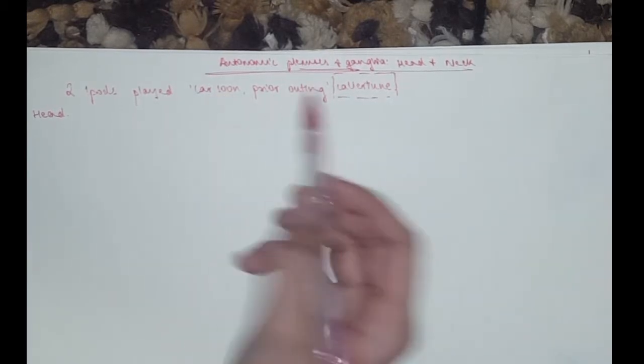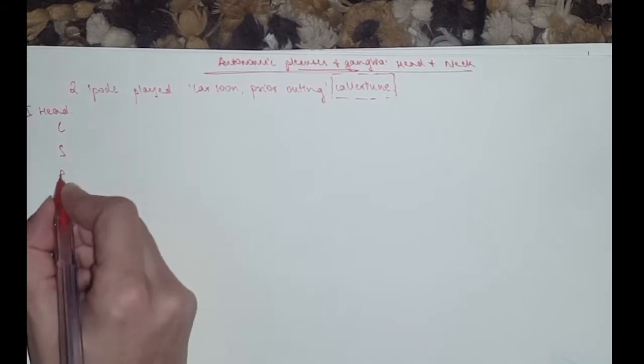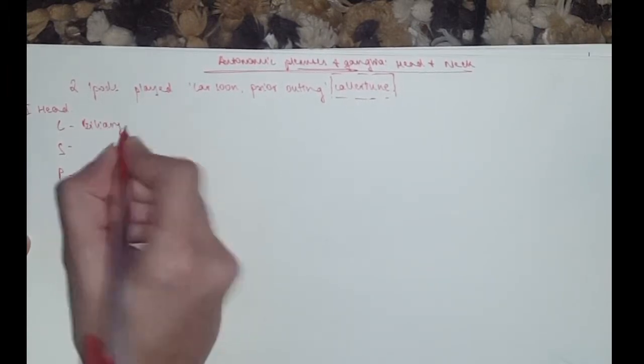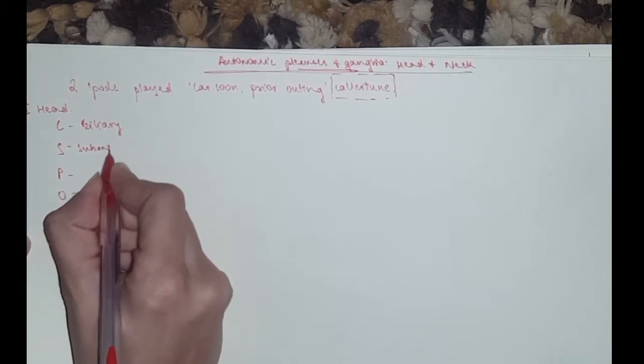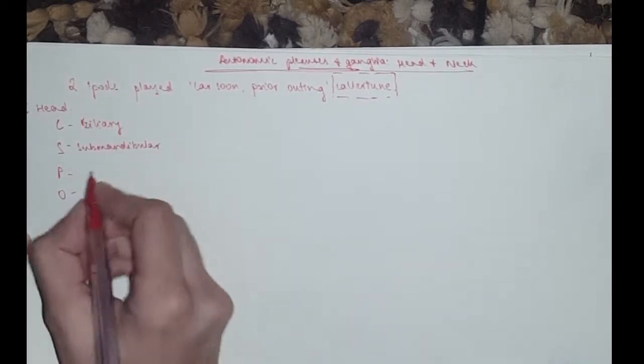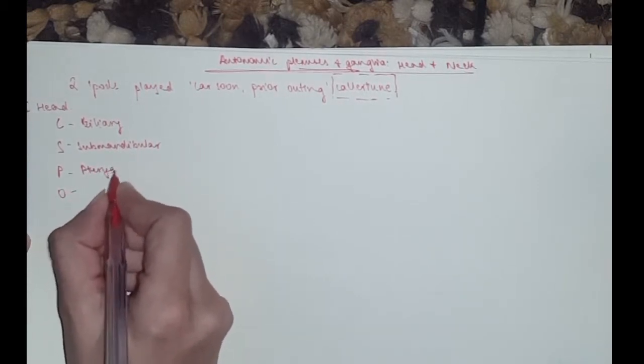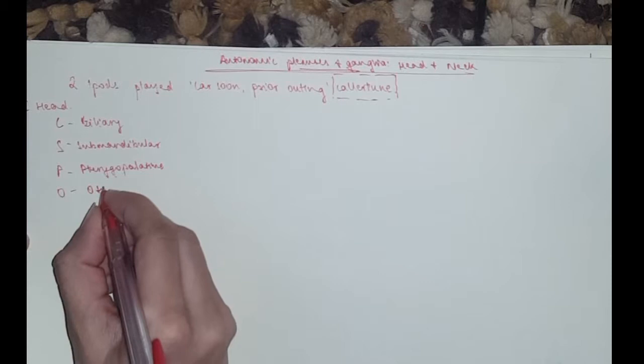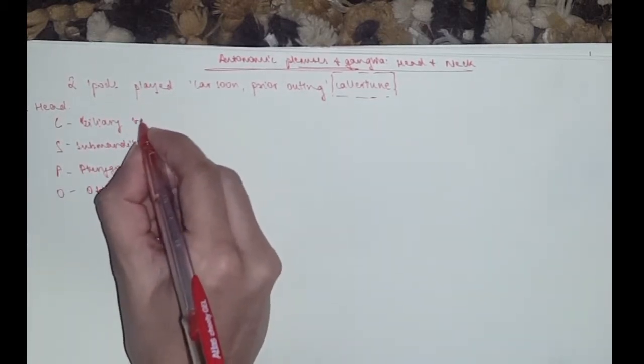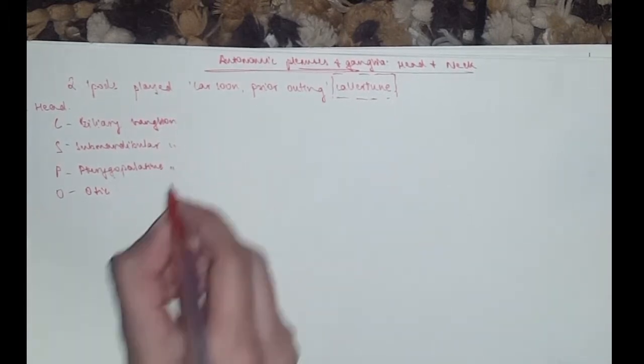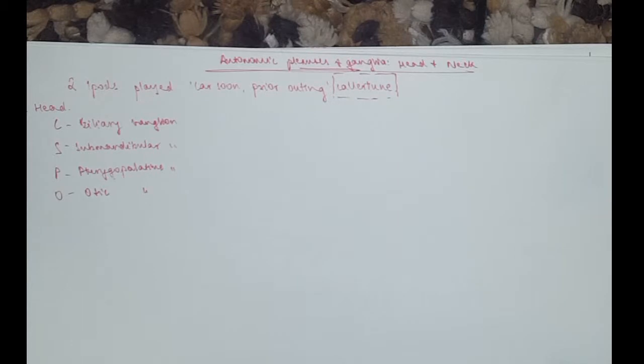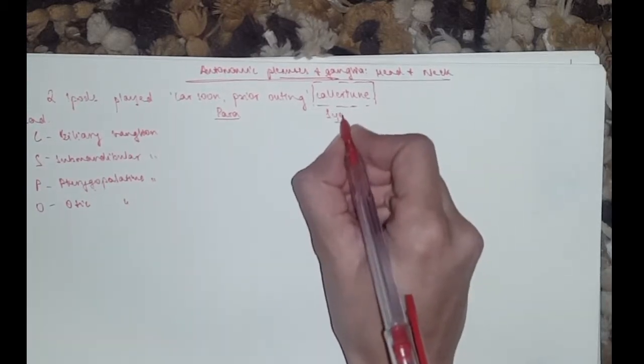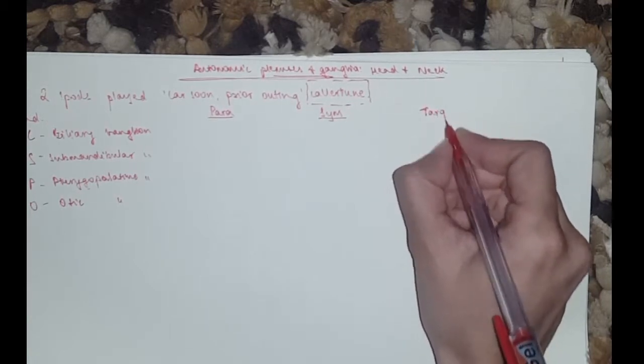Collar Tune is for the neck and the rest is for the head. So we'll start with Car Soon Prior Outing which was C-S-P-O. If you remember, it was the ganglion. So it was ciliary ganglion, submandibular, pterygopalatine, and otic ganglion.